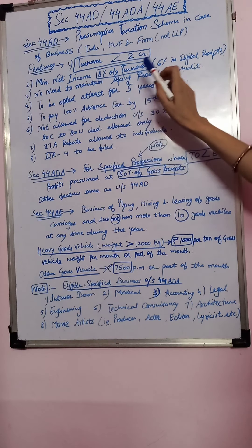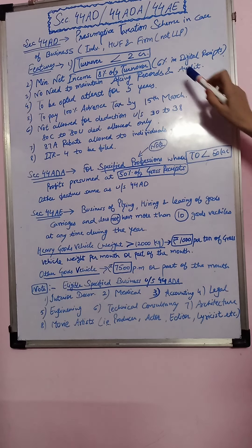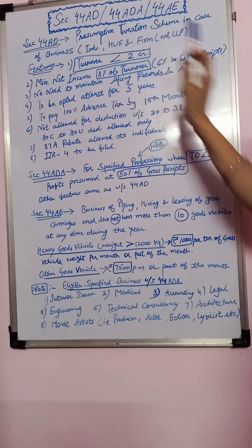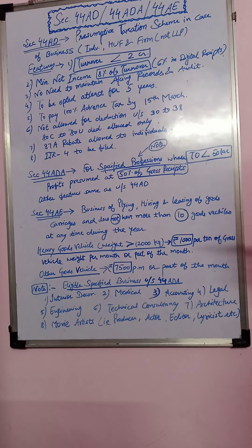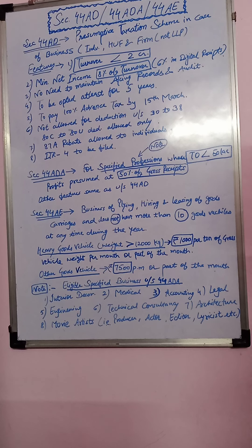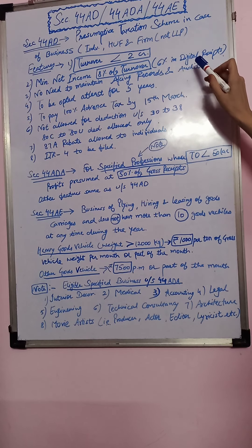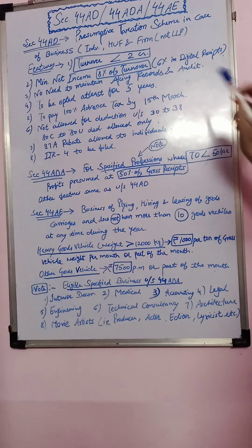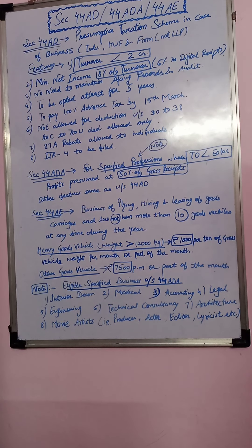Second, minimum net income: 8% of turnover or 6% in digital receipts. This was what I told you in the last class. If we have a 44AD scheme, then we will compute 8% of turnover. That will be our profit under Section 44AD. And if we have all the digital receipts, means banking channel ke through, if our business is happening, then we can avail 6% profit on the turnover.